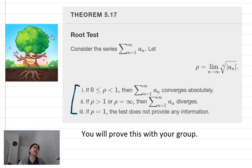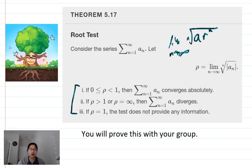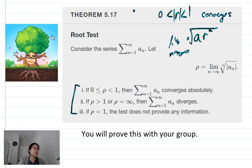If you think about the geometric series, this makes a lot of sense. A geometric series has the form a·r^n, so taking the nth root just extracts r from the exponent. When the absolute value of r is between 0 and 1, we have convergence; when r is 1 or greater, we have divergence. When the limit equals 1, it's inconclusive — try to come up with some examples of why.